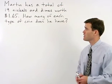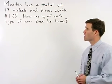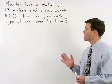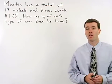Martin has a total of 19 nickels and dimes worth $1.65. How many of each type of coin does he have?